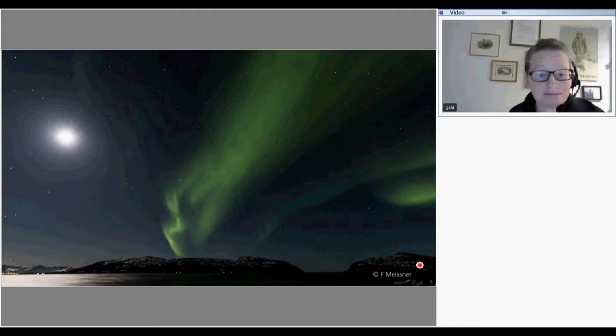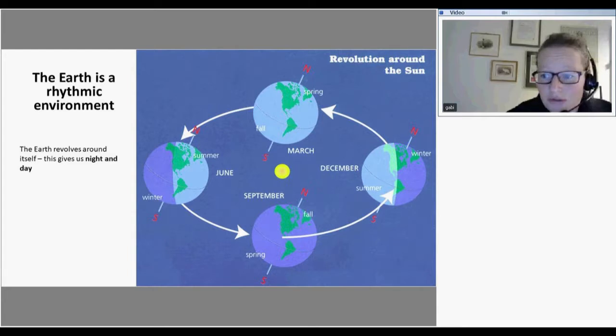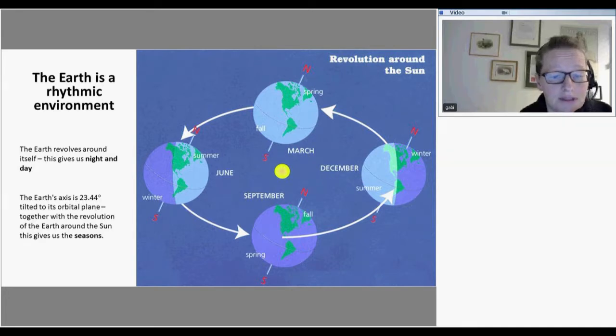We'll talk about how biological clocks are working in the Arctic. The title may not yet make sense but we'll get around to that. As you are surely all aware the earth is a rhythmic environment. The earth revolves around itself and that gives us a rhythmic environment of day and night. But the earth also is moving around the Sun and in this process it's tilted on its orbital plane by 23 degrees.